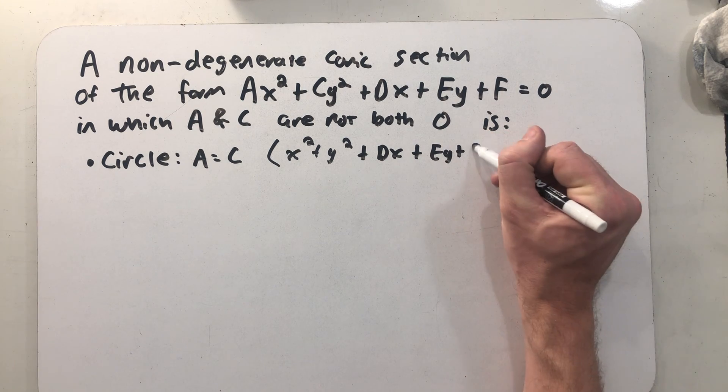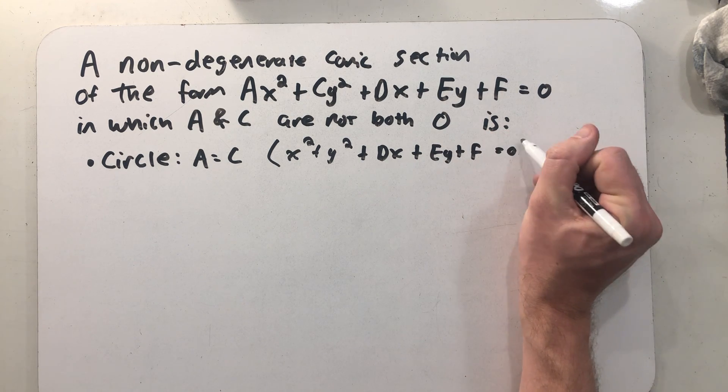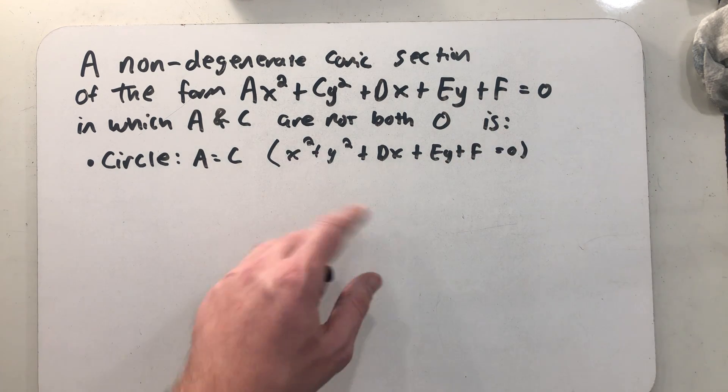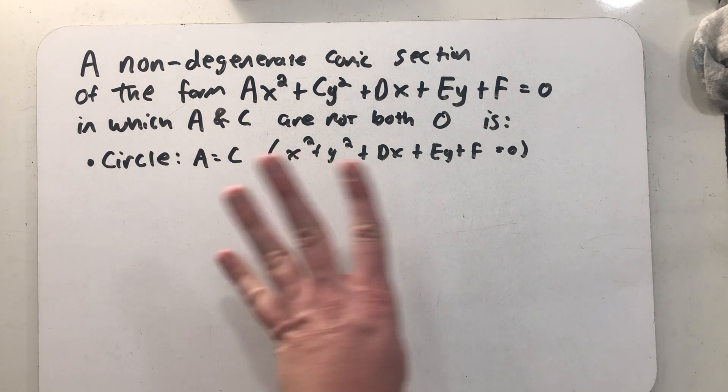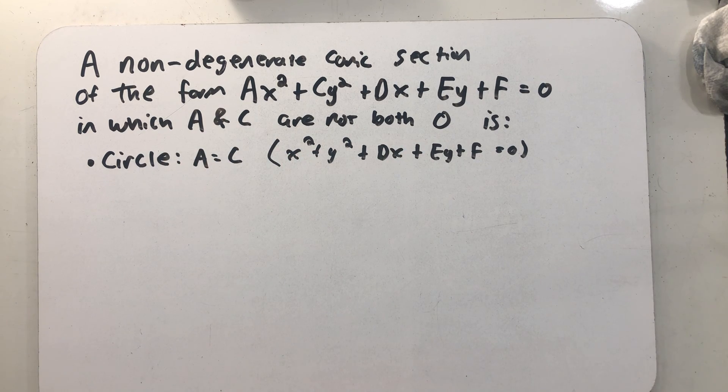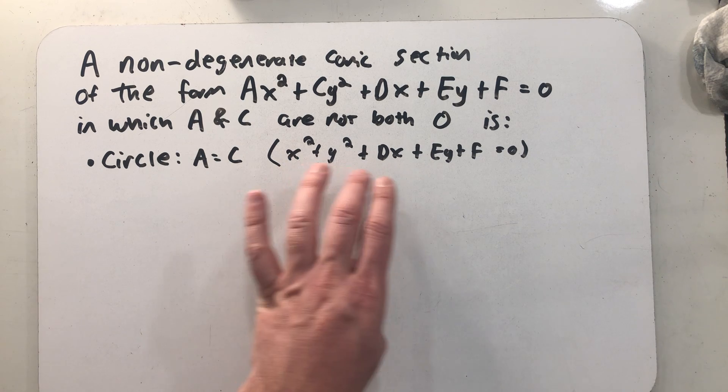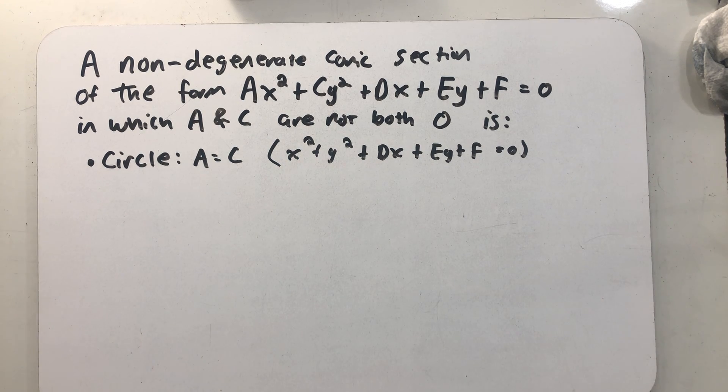But if we put any other numbers in front of x squared and y squared there, everything's going to be okay because we could just divide both sides of the equation by that value and end up with this exact same equation.